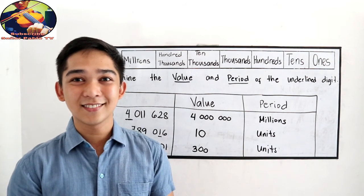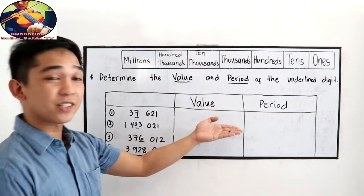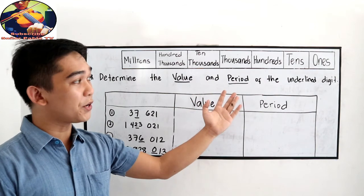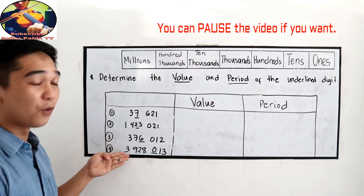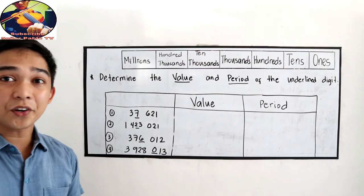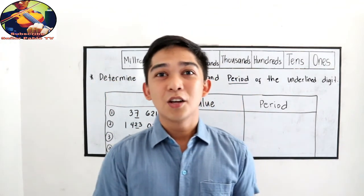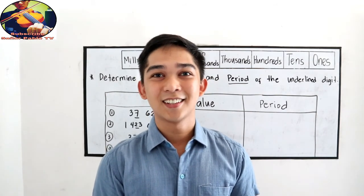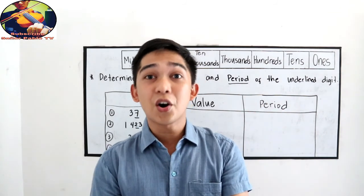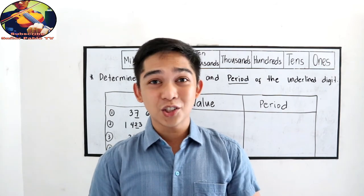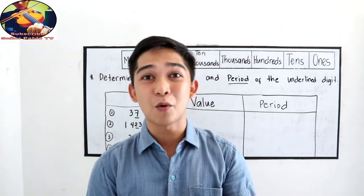Now, it's time for you to solve your exercises. This will be your exercises. Determine the value and period of the underlined digit. So we have 1, 2, 3, 4. After answering, I want you to let your mom and dad to check your work. And after checking, please try to answer all the exercises in your module or in your handbooks. Thank you for watching Senior Pabble TV. Don't forget to share, like, and subscribe in our channel.